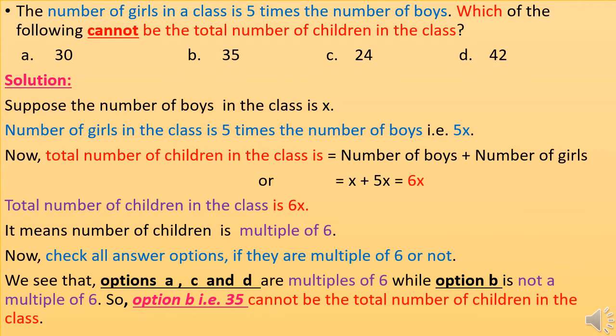The number of girls in a class is 5 times the number of boys. Which of the following cannot be the total number of children in the class? Suppose the number of boys in the class is X. Then the number of girls is 5 times the number of boys, that is 5X.